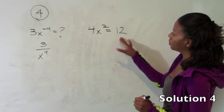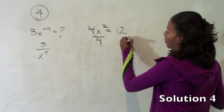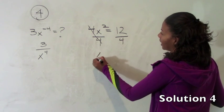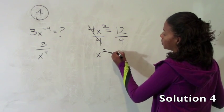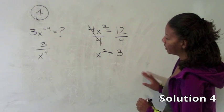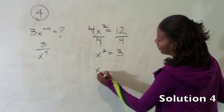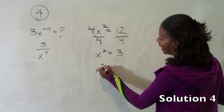4x squared equals 12. To figure out what x squared is, we divide both sides by 4 and we get that x squared equals 3. In order to figure out what x is, you have to take the square root of both sides.